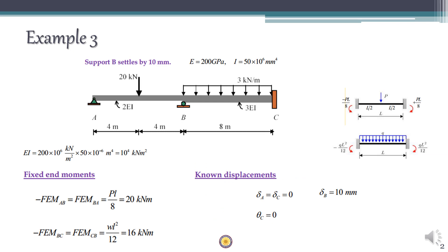An important point to note here is that we have a support settlement, and the flexural rigidity is varying from 2EI in the first span to 3EI in the second span. The loading consists of a UDL throughout and a point load at the center.